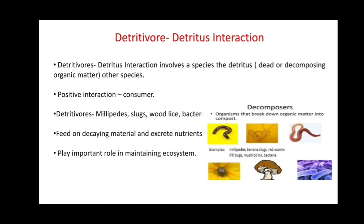Detritivore-detritus interaction involves a species that feeds on detritus — dead or decomposing organic matter of other animal or plant species. Detritivores feed on this decaying material and excrete nutrients, playing an important role in maintaining the ecosystem. Examples of detritivores include millipedes, slugs, woodlice, and bacteria. Fungi and bacteria also break down organic matter into compost, like earthworms.